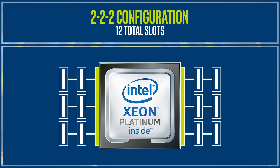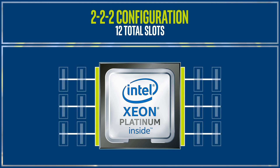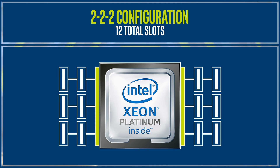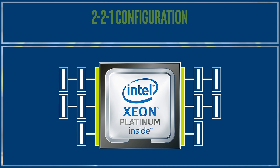Here is a 2-2-2 configuration where each controller has two slots on each of its three memory channels — that's a total of 12 slots per processor. A 2-2-1 configuration has two slots on two channels and one slot on the third channel, for 10 slots per processor.